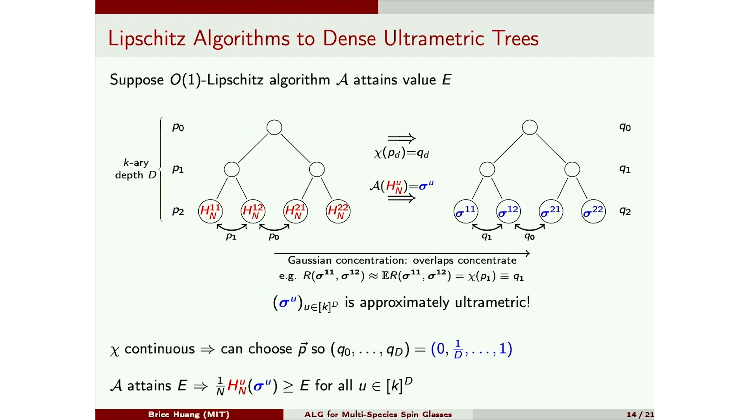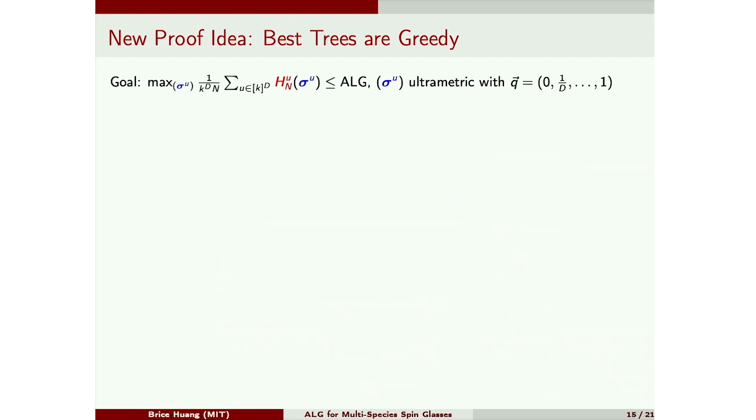So now we've kind of constructed this structure. So if we can show the following claim, then we'll be done. The claim is: for any constellation sigma with this ultrametric shape, if you plug each sigma into its corresponding H and average, this will be at most ALG. Because, on the one hand, from the previous slide, we know that each of these numbers will be at least E. So then this shows that E is at most ALG.